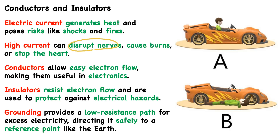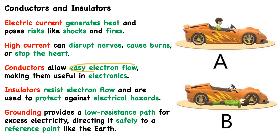High currents can disrupt nerves, cause burns because of that significant heat generation, and can even stop the heart. For this to happen, current has to be able to flow. Materials that allow current to flow are considered conductors — materials that allow for easy electron flow, which makes them useful in electronics. Traditionally, conductors mean materials used in electronics to conduct electricity efficiently, like copper or aluminum in wires.